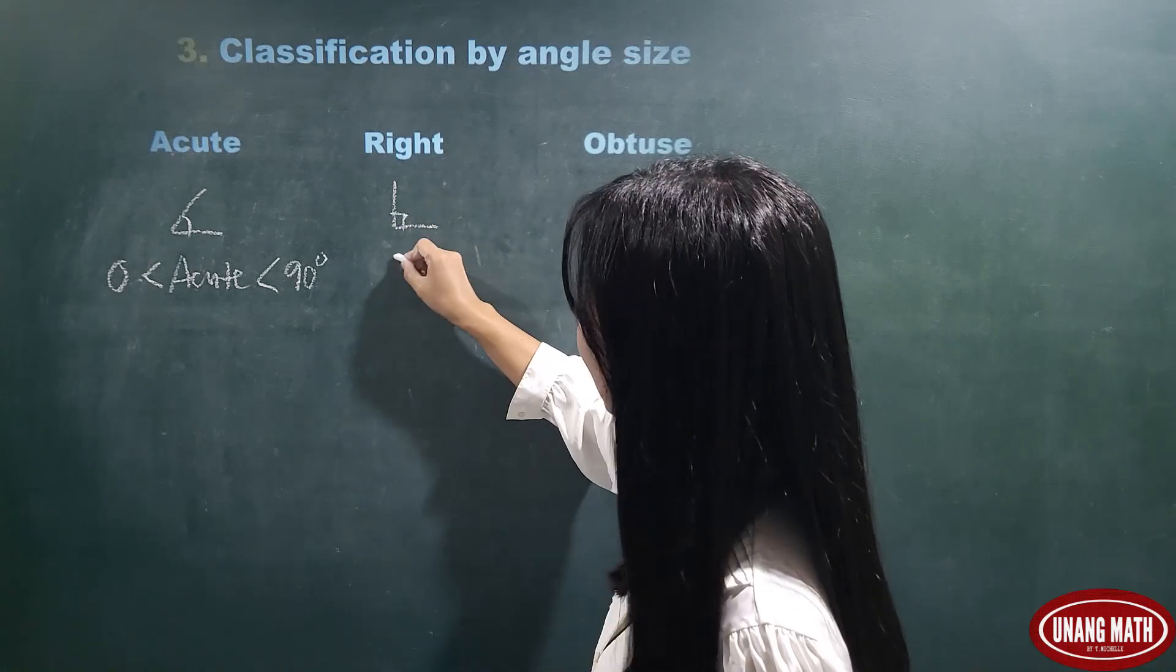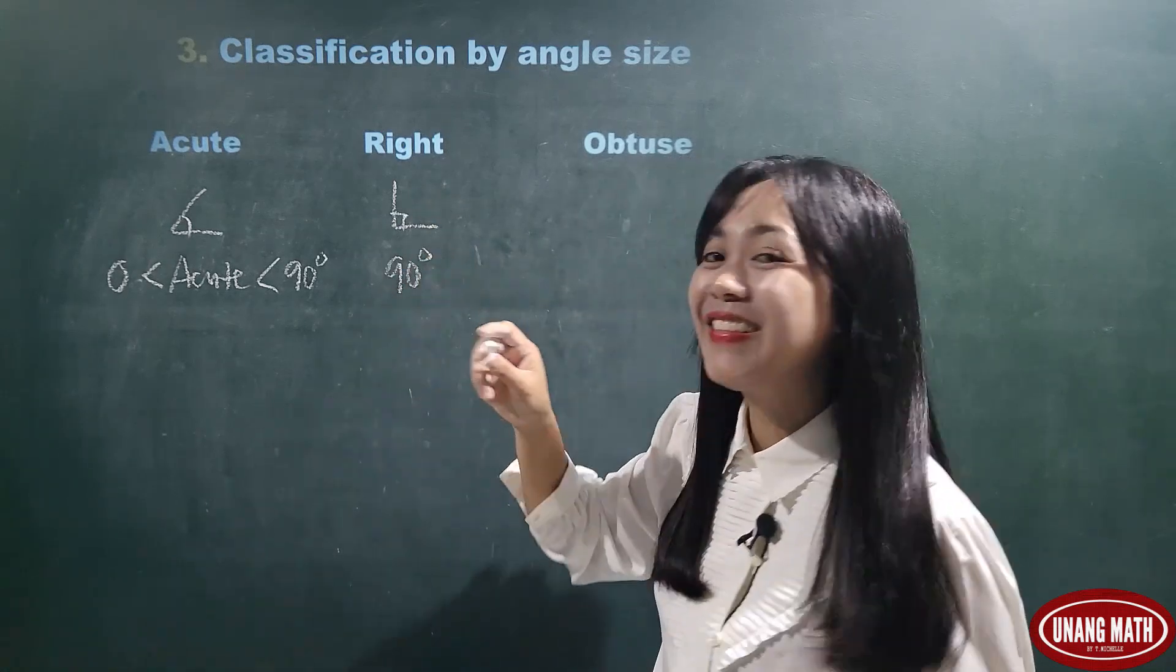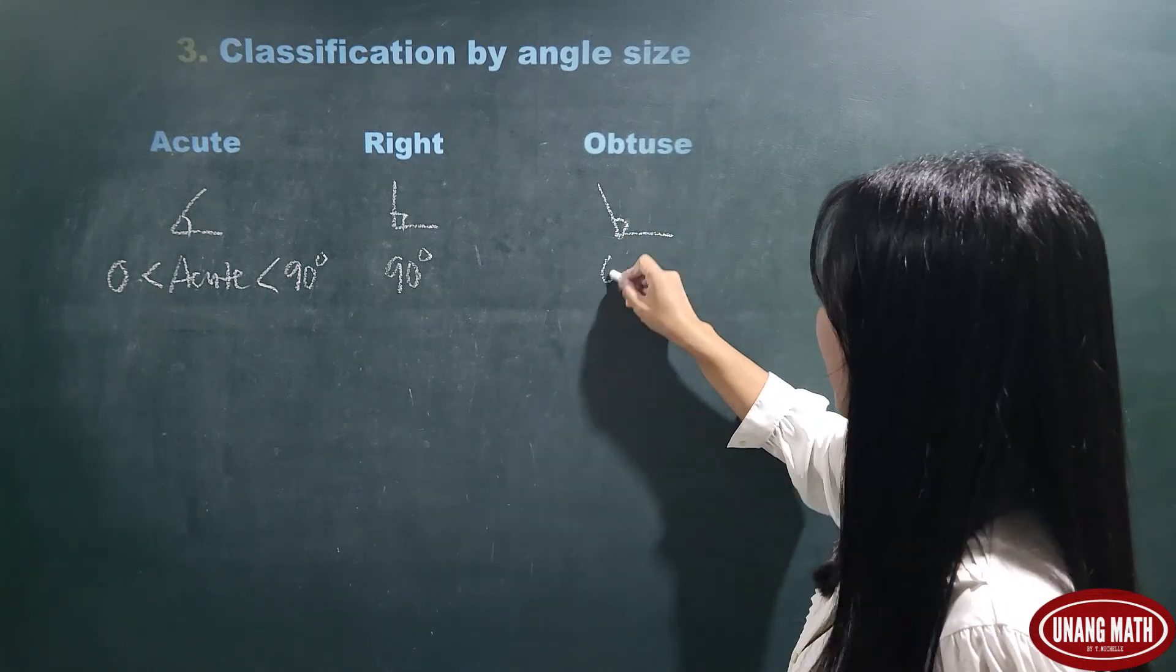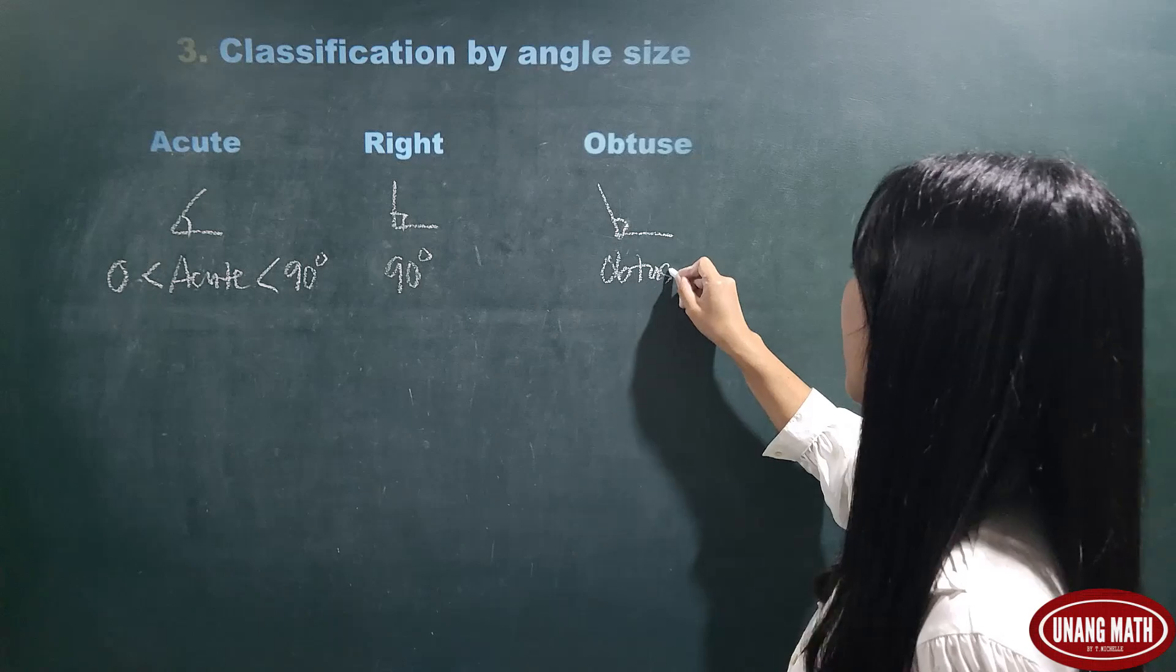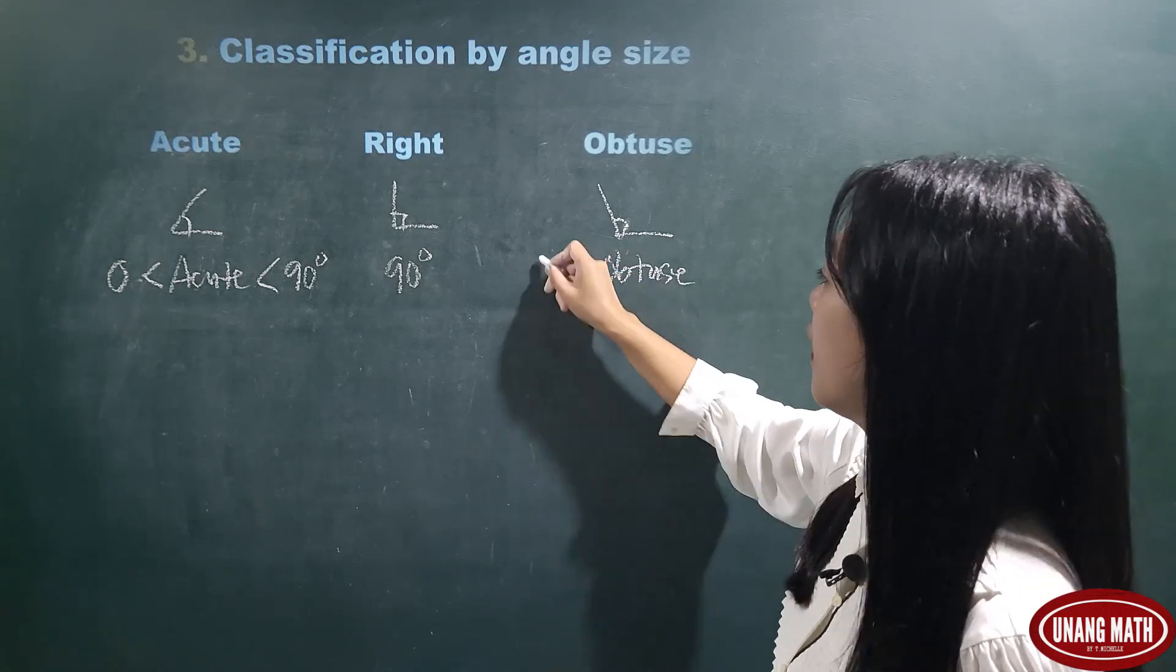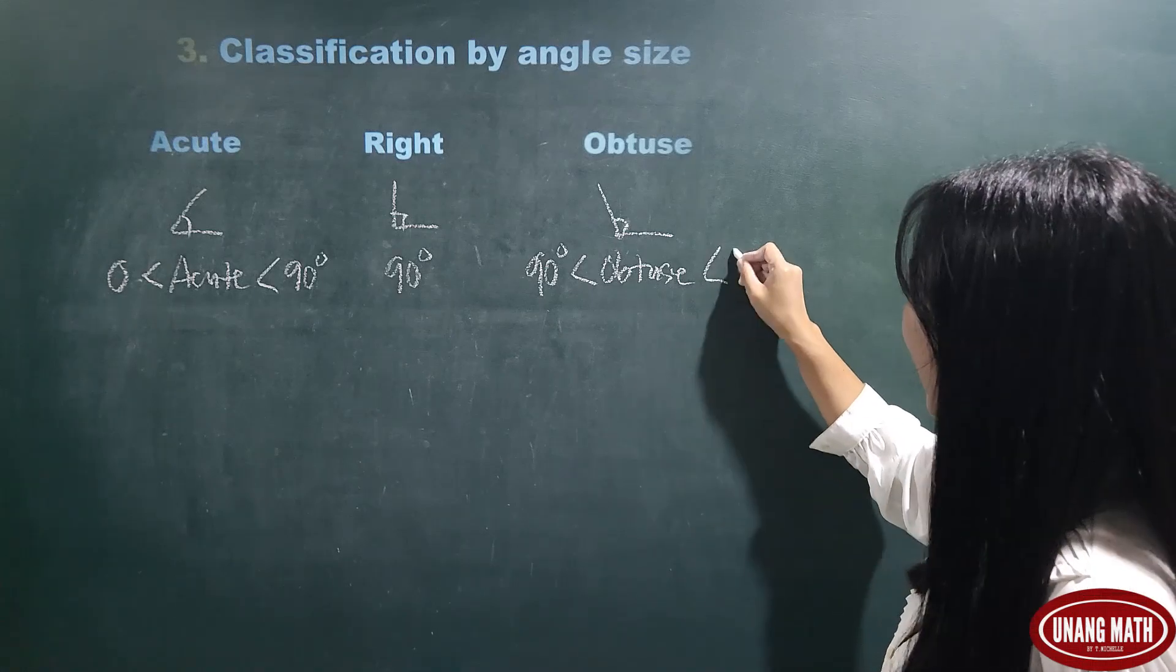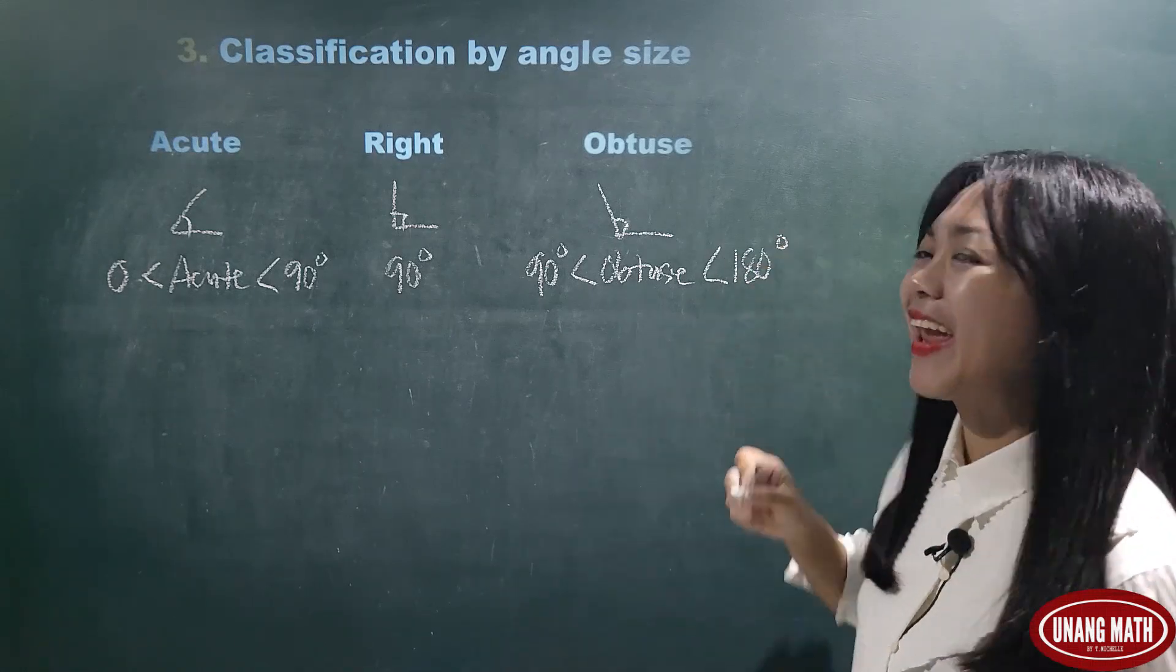Okay, right angle is exactly 90 degrees. Okay, obtuse angle, this is an angle that is more than 90 degrees but less than 180 degrees.